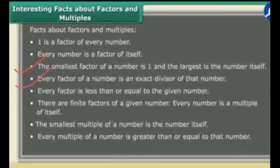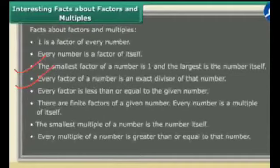Every factor is less than or equal to the given number. Like we have seen the factors of 10 are 1, 2, 5 and 10 — where 1, 2 and 5 are less than 10, but 10 is equal to 10. So every factor is less than or equal to the given number.